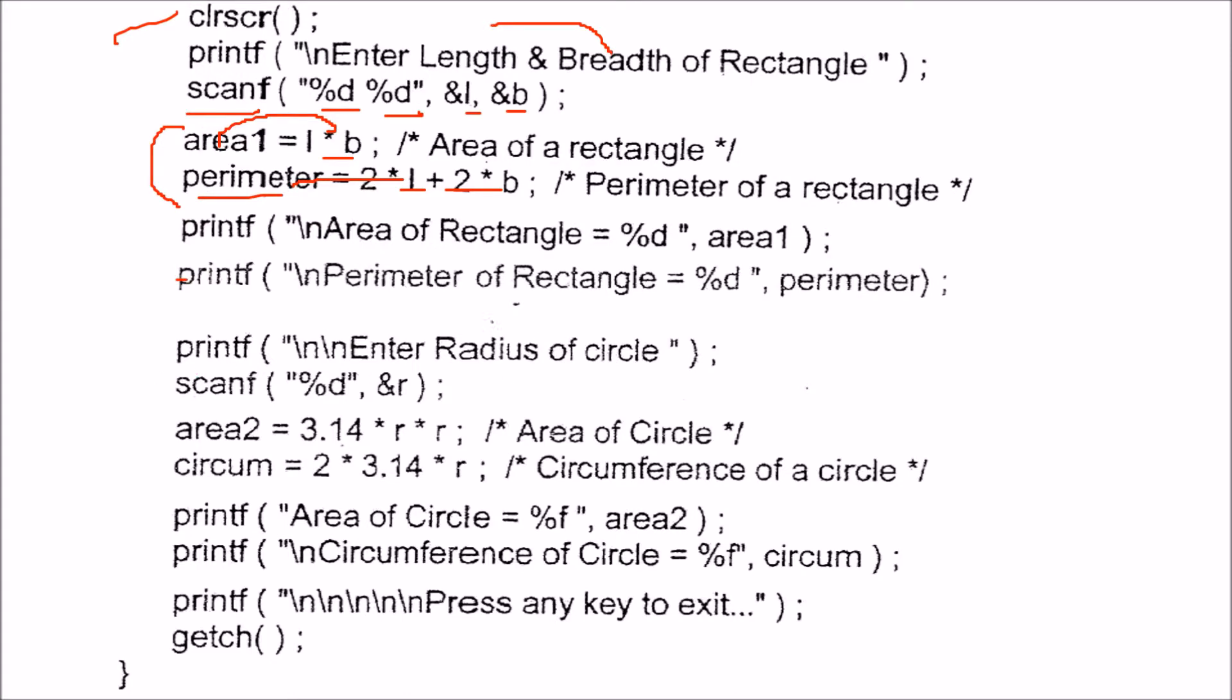Then you can ask for the radius of a circle. Enter the radius of a circle. So you can scanf through this ampersand R. This ampersand shows that this memory location will be named as R and whatever radius is being given will be placed here.